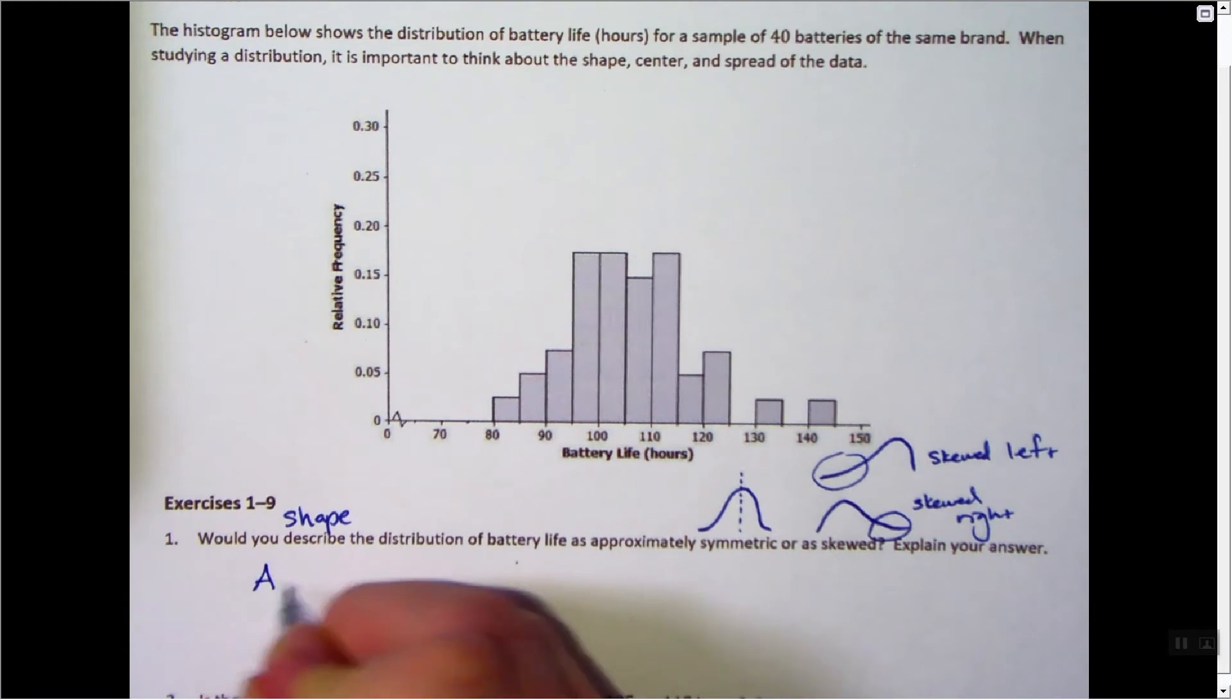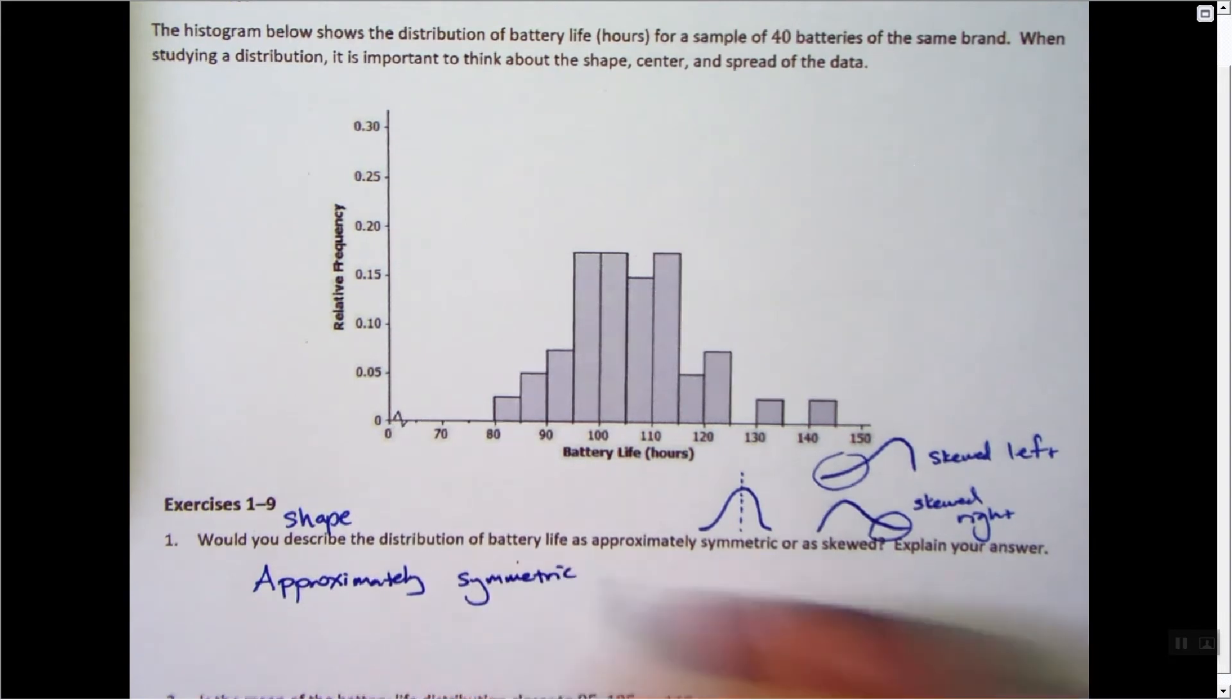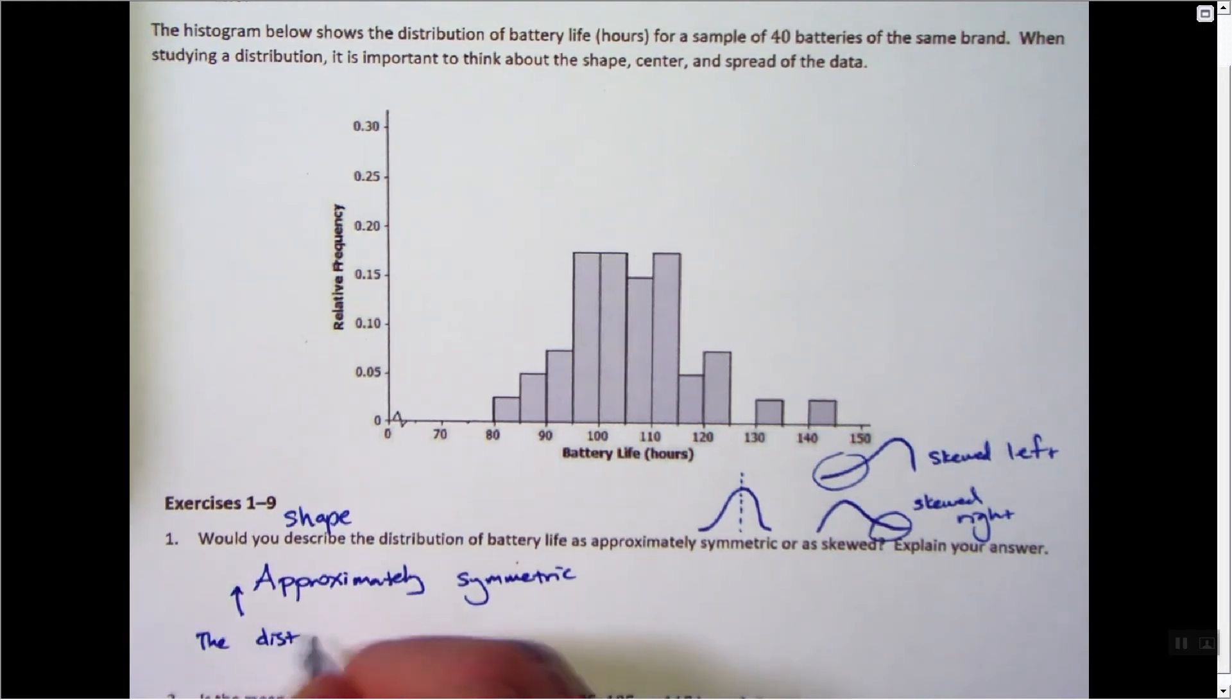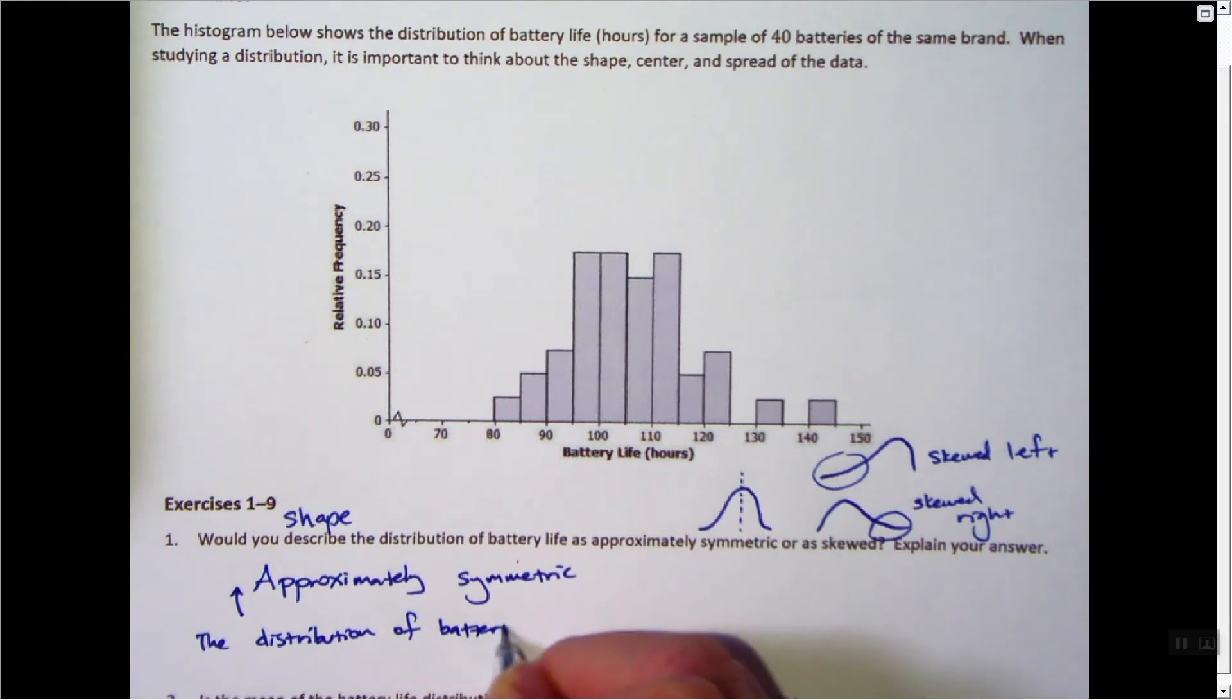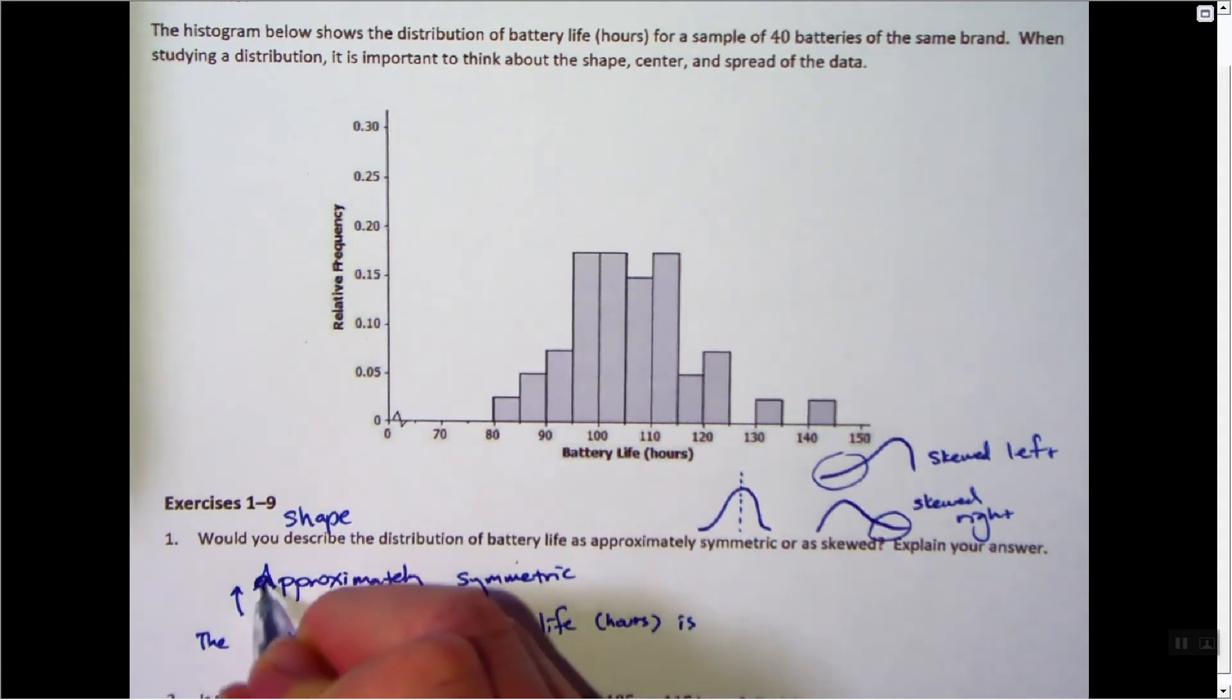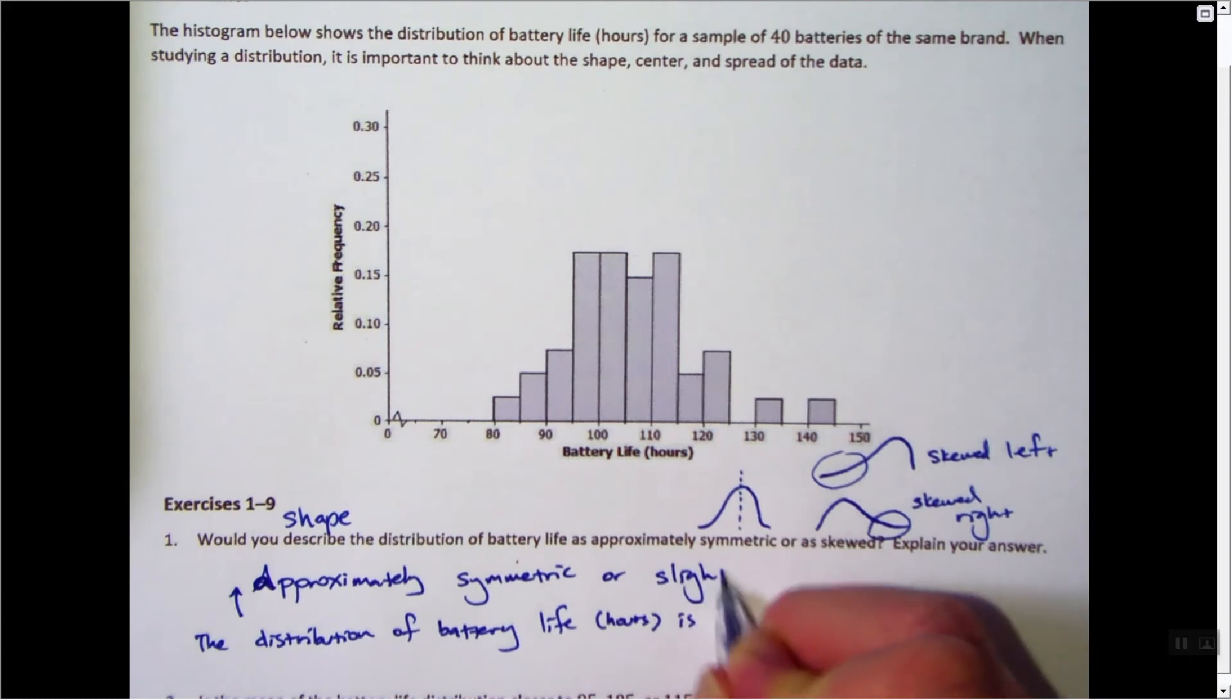You know what I didn't do? I did not talk about the context. So I'm going to say, put this up here, the distribution of battery life in hours is, and then this should be a lowercase a,